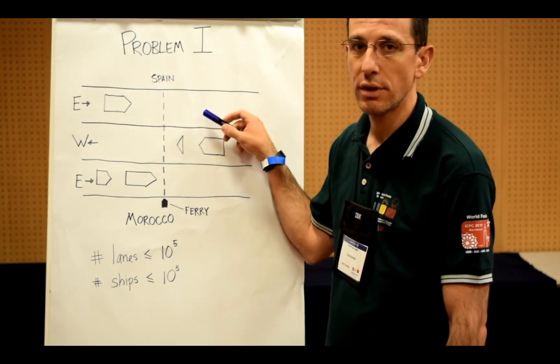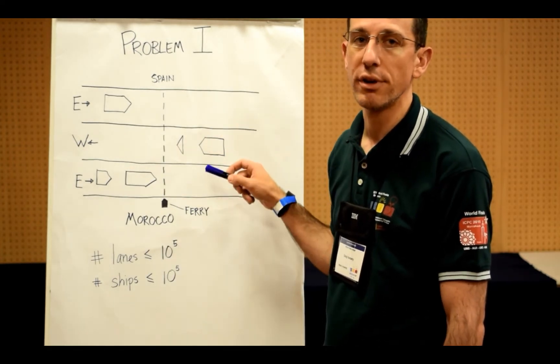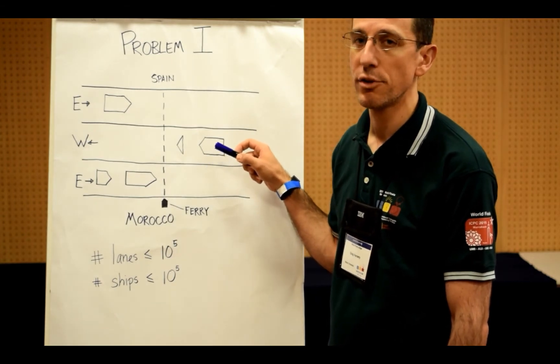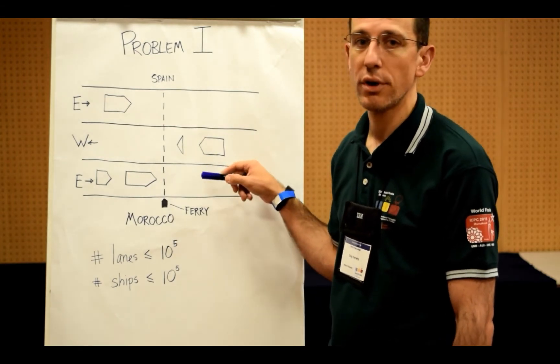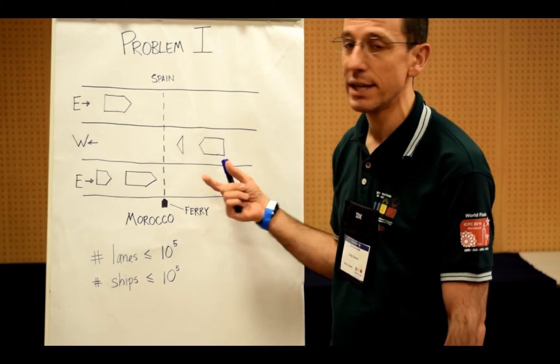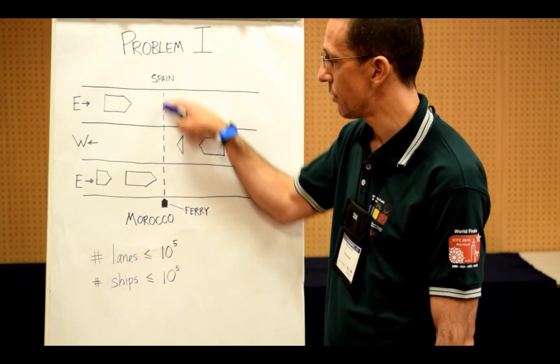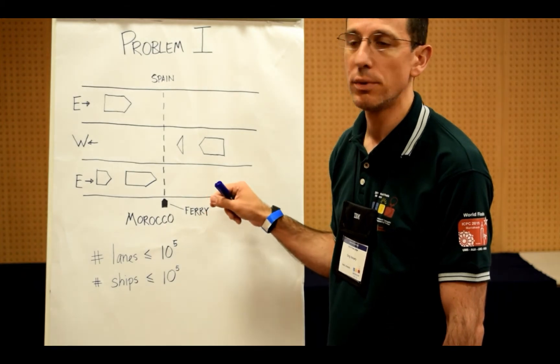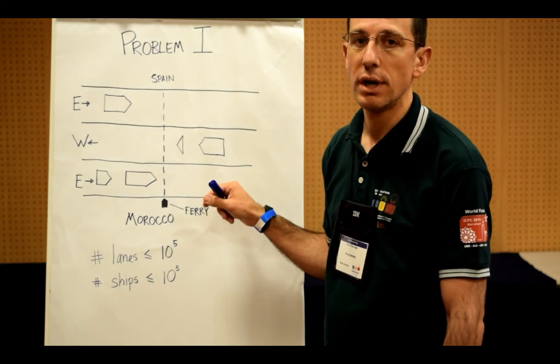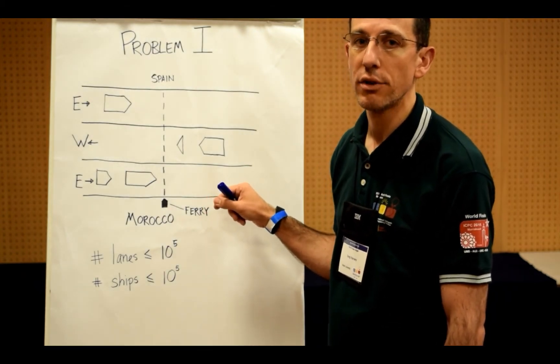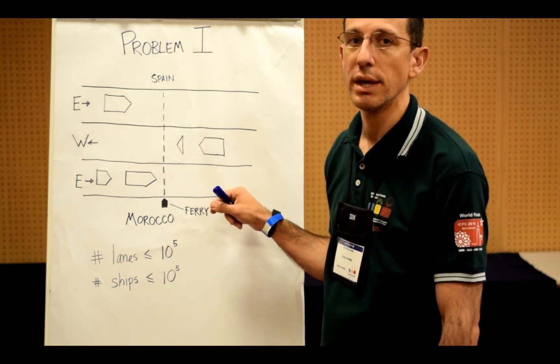Once you get all the ships into the same representation for the same reference of time and space, then you can sort. Each of these ships presents an interval of time during which you may not cross because those ships are touching this crossing line. You can sort all those intervals by their time and then search for the largest gap in those intervals.